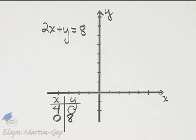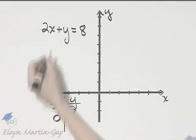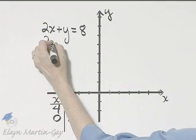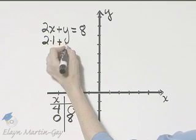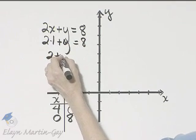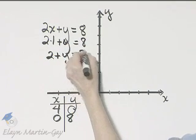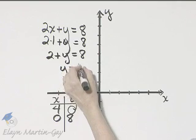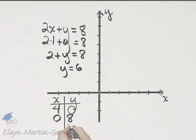And then let's find a third ordered pair as a check. Let's let x or y be any number we want and solve for the other variable. I'll let x be, say, 1. So 2 times 1 plus y is equal to 8, or 2 plus y is equal to 8, and if I subtract 2 from both sides, I'll have that y is 6, and that was when x is 1.